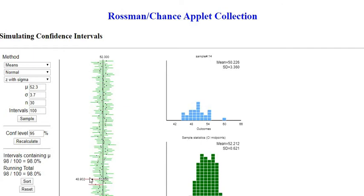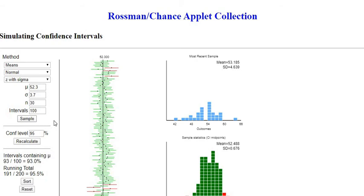If you notice down here, this one is red because it only goes from 48.902 up to 51.550, so 52.3 was completely missed in this one. That's what I was talking about—sometimes you will get unusual samples. Right now there's 98%, so if I sample again over time, this one notice we only got 93%, but our running total is 95.5%. So over time as we sample from this population, 95% of them will contain the actual mean.